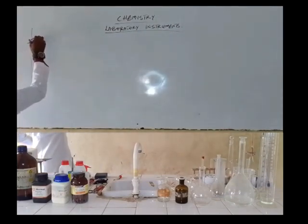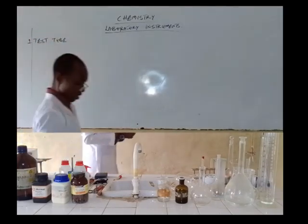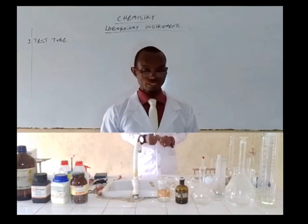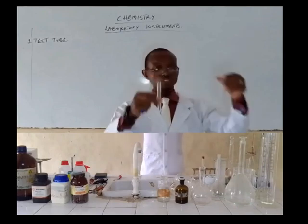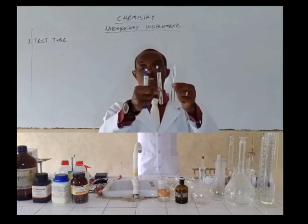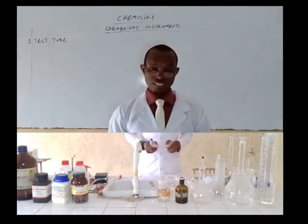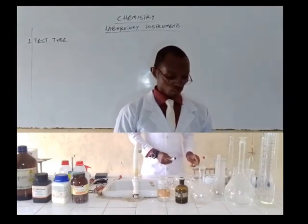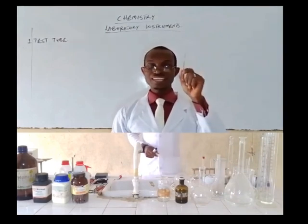The first laboratory instrument we are talking about is the test tube. It is a glassware, and it comes in different sizes depending on the kind of practical you are carrying out. As you can see, these are two different test tubes but they are not of the same size — this one is longer in length compared to the other. So we have varying sizes of the test tube.